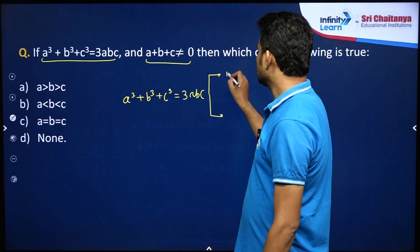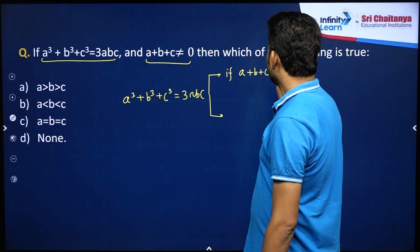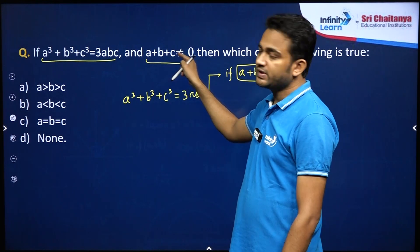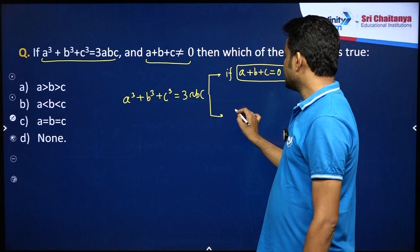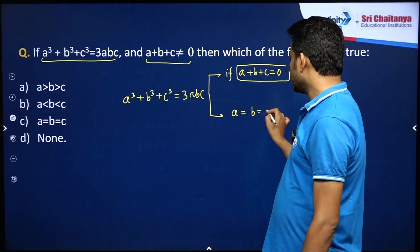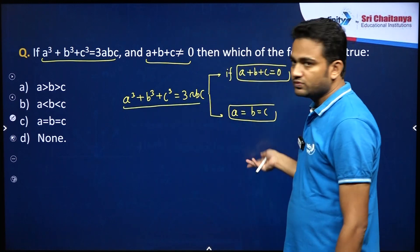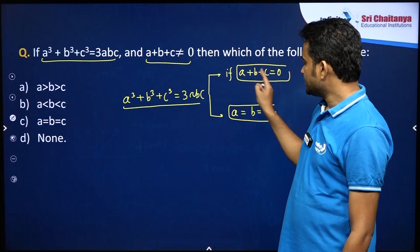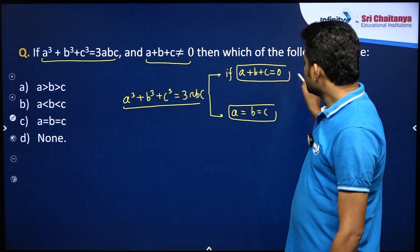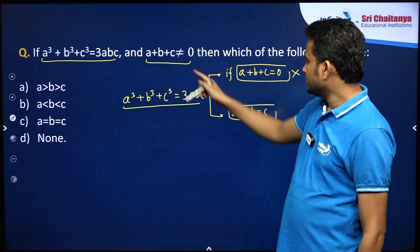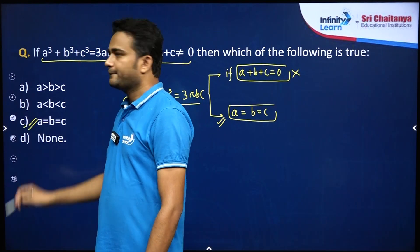The first condition, which everyone knows, is a plus b plus c equals 0. But this is already mentioned — a plus b plus c is not 0. Then what is the second condition? The second condition is that all of them must be equal. So this identity holds true for two scenarios: either a plus b plus c equals 0, or a, b, c must be equal. Since the first is not valid here, we use the second, which is option C.